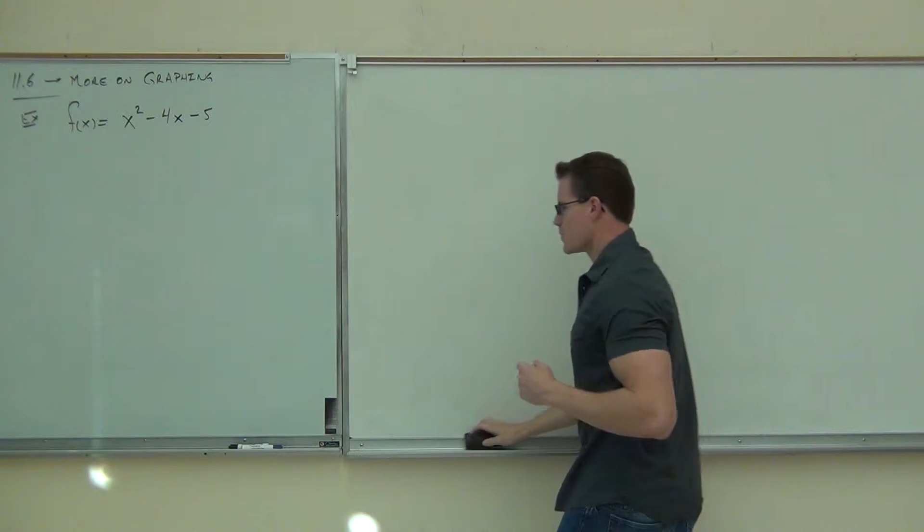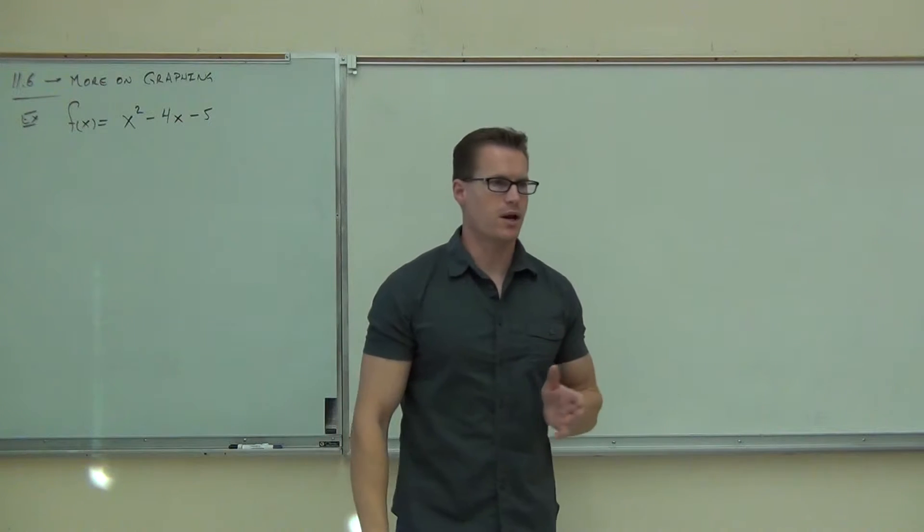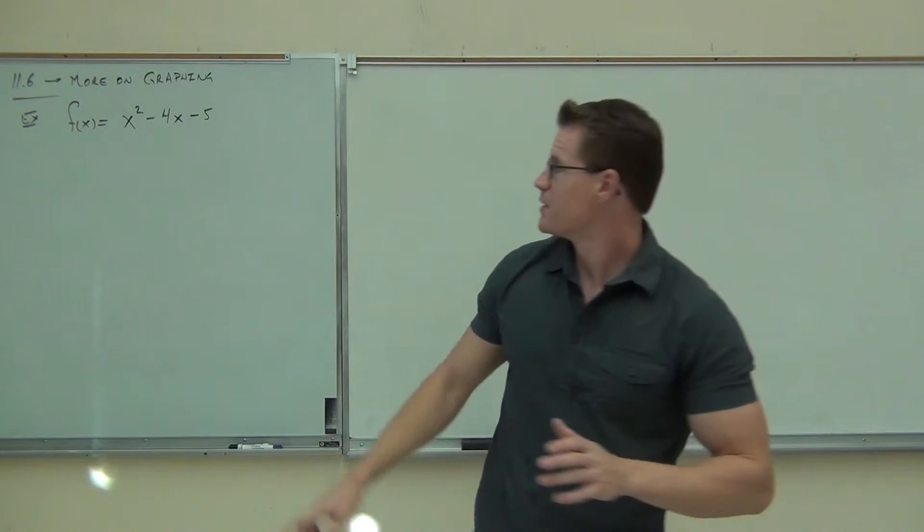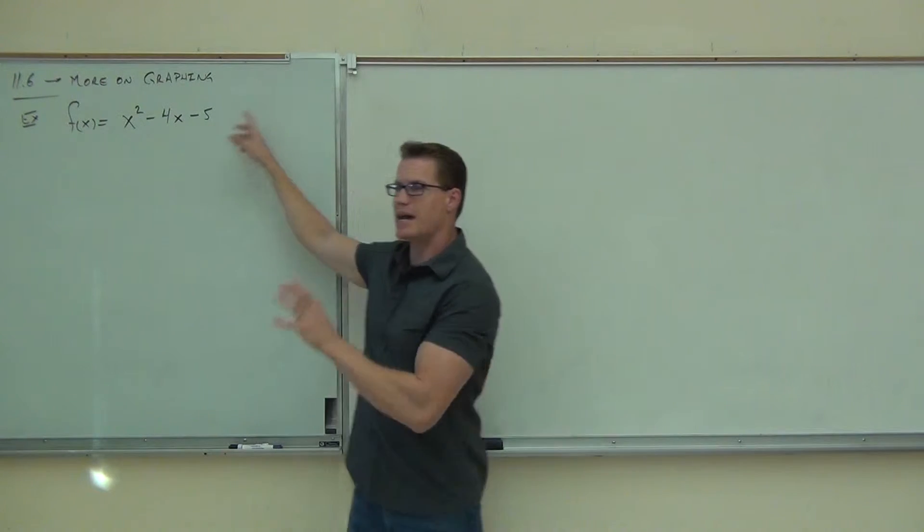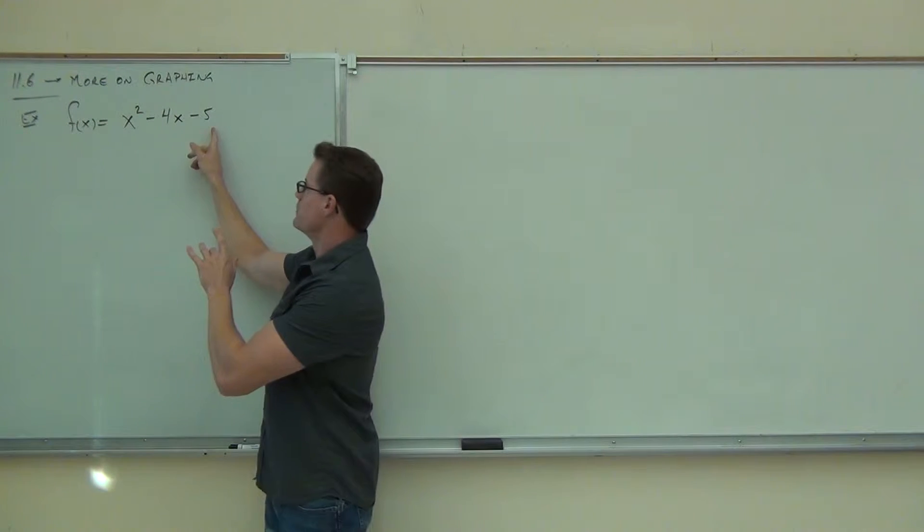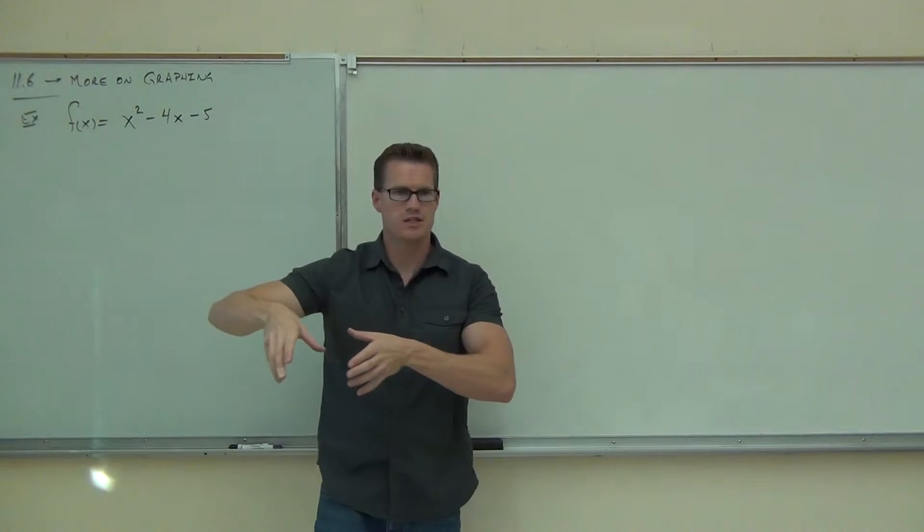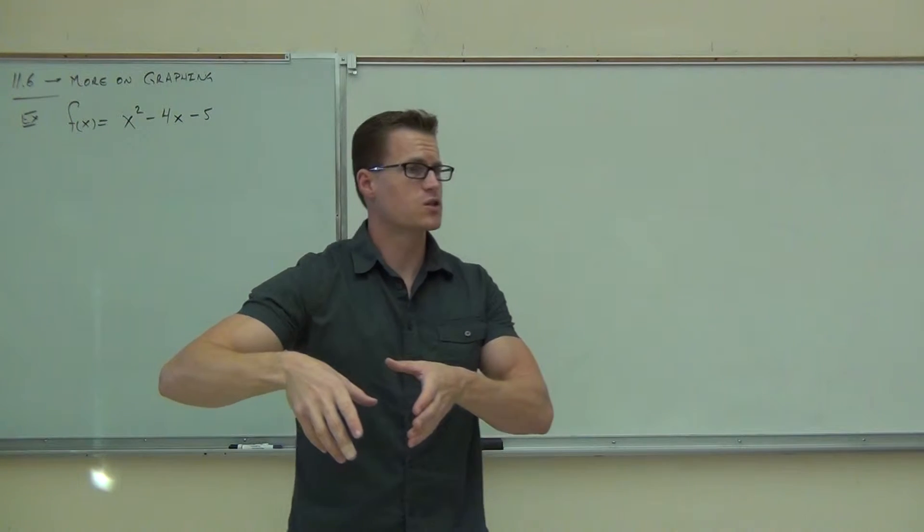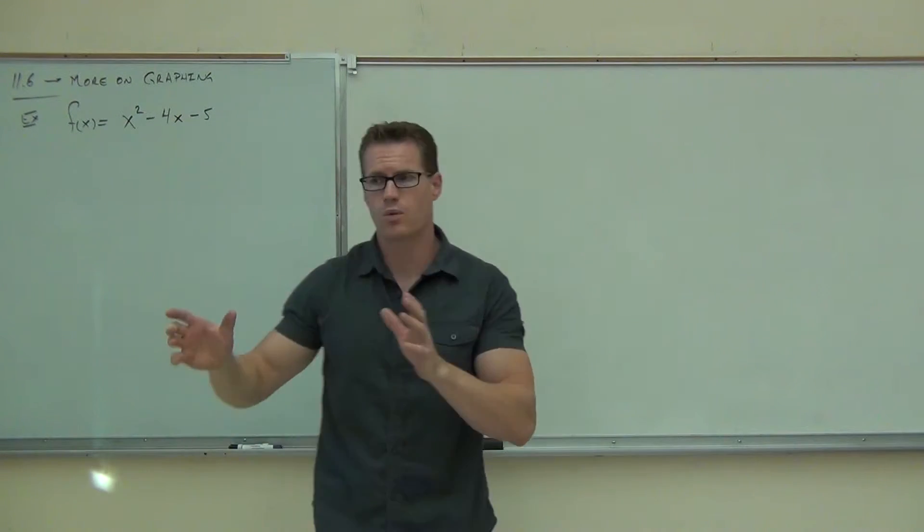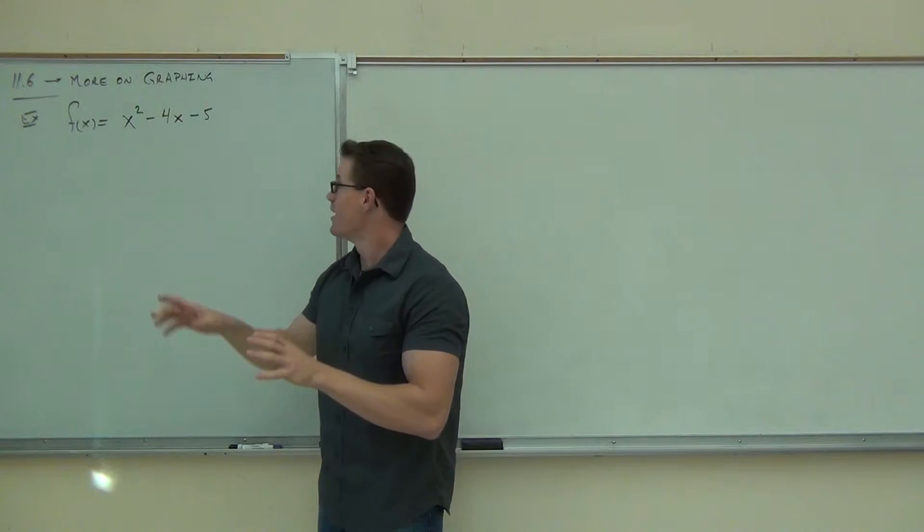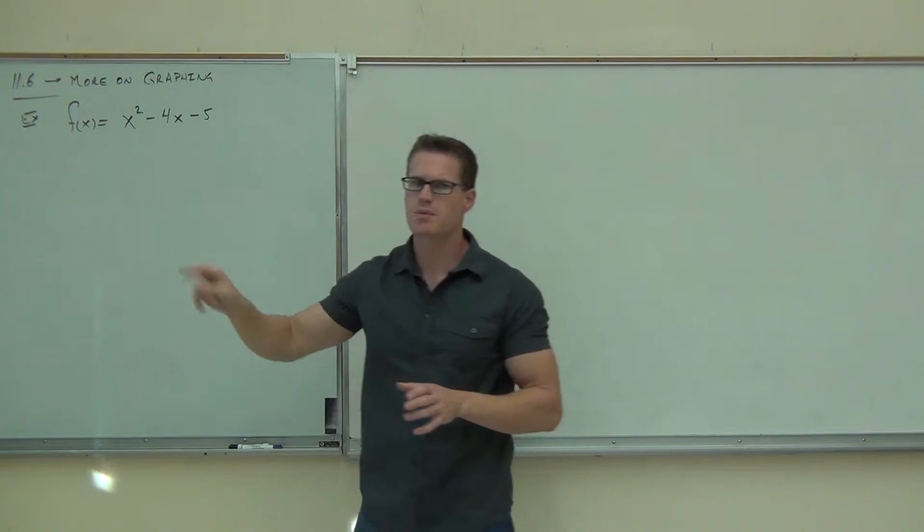The problem is you can't tell me whether this shifts up, down, left, or right right now. Because it's not in the proper form. This number would change if you had it in the proper form. But this number and this number do still tell us things. This right here tells us whether we're upward facing or downward facing, depending on whether you're positive or negative. It tells you whether you're a wide graph or a narrow graph, depending on whether you're above one or less than one. This also tells us something. We're going to come to that in just a moment.